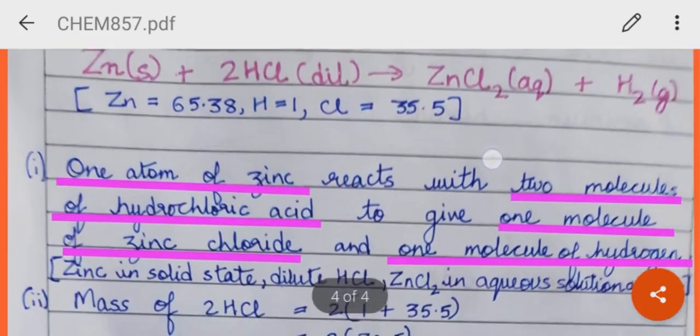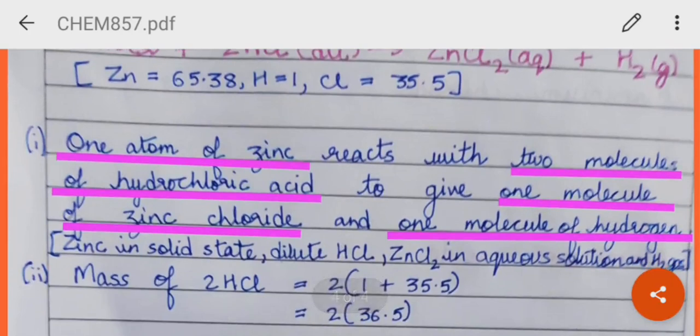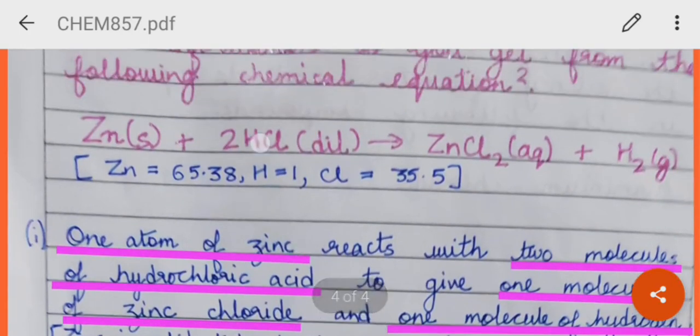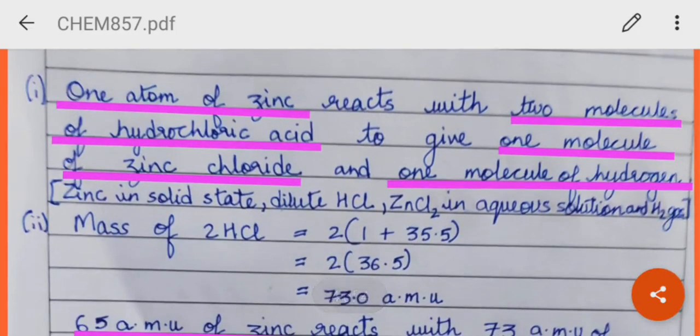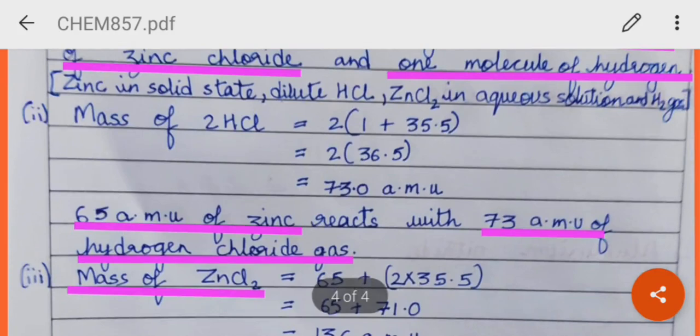Then, let us see what is the mass of HCl. We know the mass of zinc 65. Now, since there are two molecules of HCl, the atomic mass of hydrogen is 1 and of chlorine is 35.5. So, on calculating, what do we get? 73. 73 is the atomic mass unit of 2HCl.